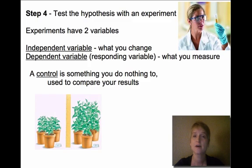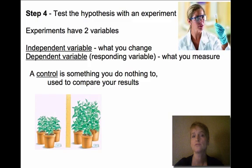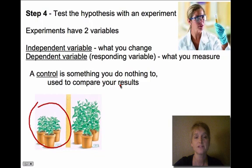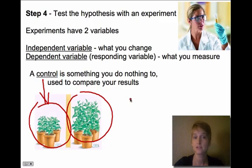Step four is to test the hypothesis with an experiment. Experiments always have two variables: the independent variable, which is what you change, and the dependent variable, which is what you measure. Good experiments also have a control — something you don't do anything to, used to compare your results. A classic example is a plant with fertilizer versus without fertilizer. The plant without fertilizer is the control. The independent variable is fertilizer or no fertilizer, and the dependent variable is how the plant responds — so we would measure the growth of the plant over time.